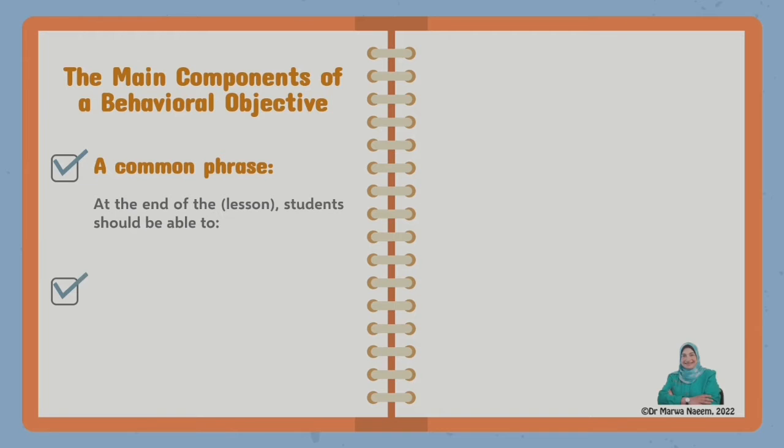The second component of a behavioral objective is what is called a behavioral verb. A behavioral verb is defined as a verb that can be measured. Simply this means that the verb can be used to ask a question. So if you have any verb that can ask a question, that can be used as a question, so it's a behavioral verb.